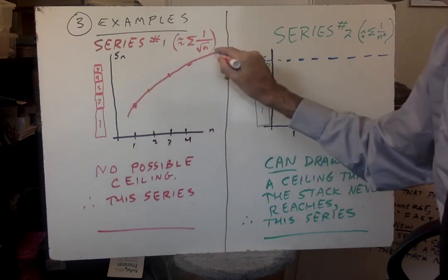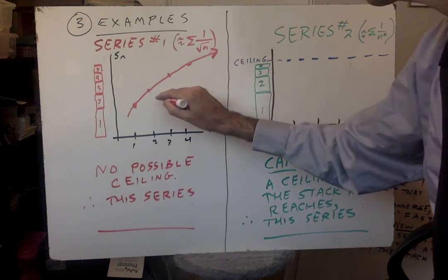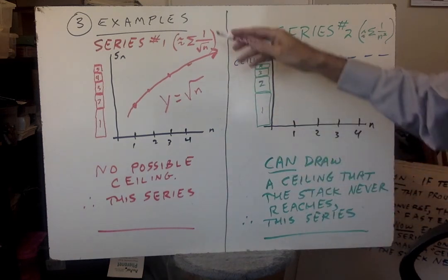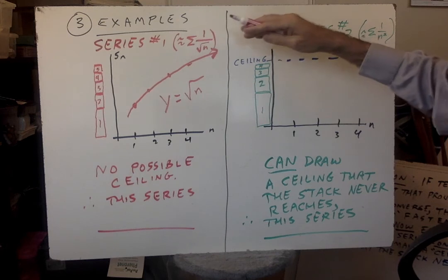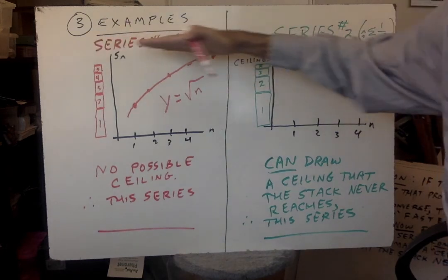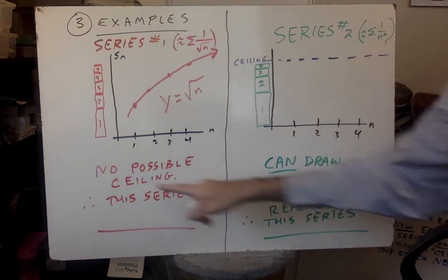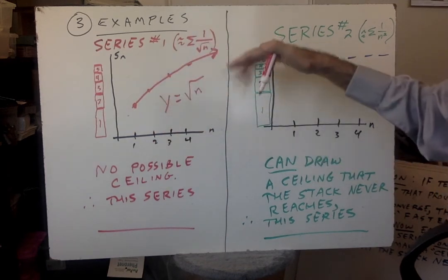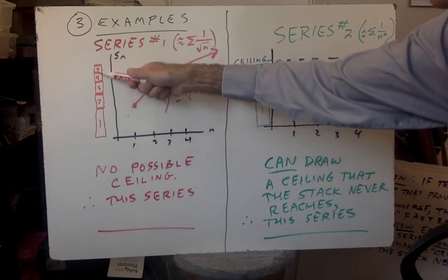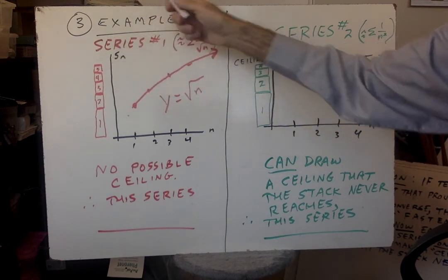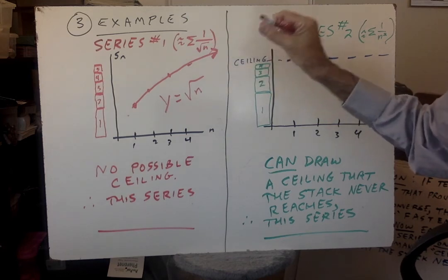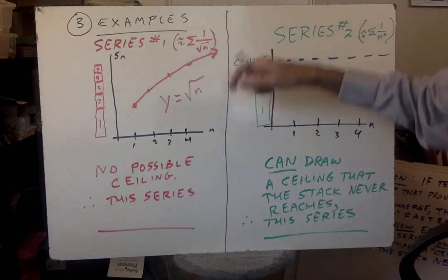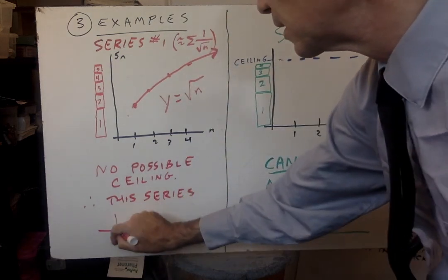And this graph is supposed to look like this. This is approximately the y equals square root of n graph. Can you draw a ceiling that this graph will never cross? Does this graph have a horizontal asymptote is another way of looking at it? And the answer is no. There's no possible ceiling. You know that square root graph very well. There's no possible ceiling to this graph. So it's possible for the terms to be shrinking, they're getting closer to zero, but they don't shrink fast enough. So if you graph their partial sums, you get this kind of graph, no possible ceiling. So this series diverges.